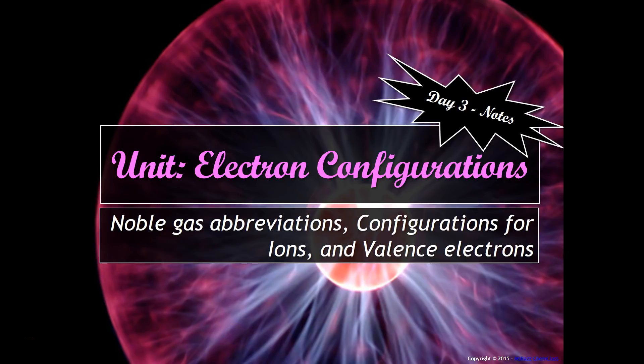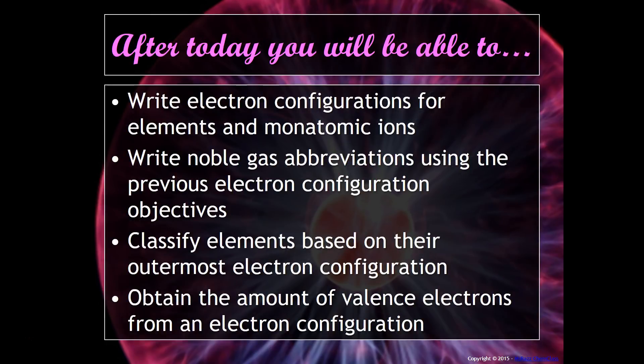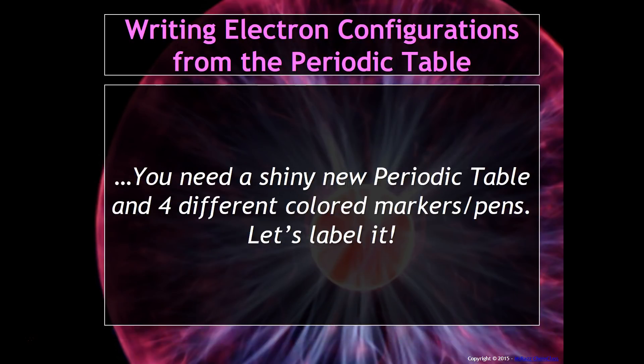Today is the day — remember I was telling you there would be a shortcut to help you write electron configurations? At the end of this video you will be able to write electron configurations for elements and monatomic ions, write noble gas abbreviations using previous electron configuration objectives, classify elements based on their outermost electron configuration, and obtain the number of valence electrons from an electron configuration.